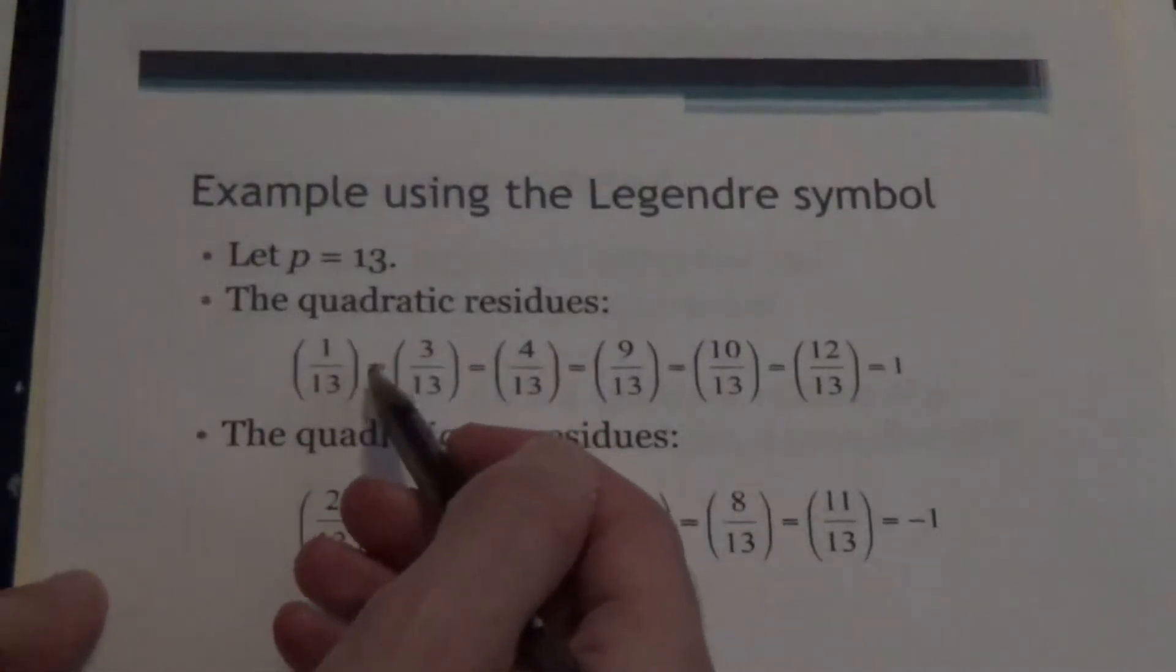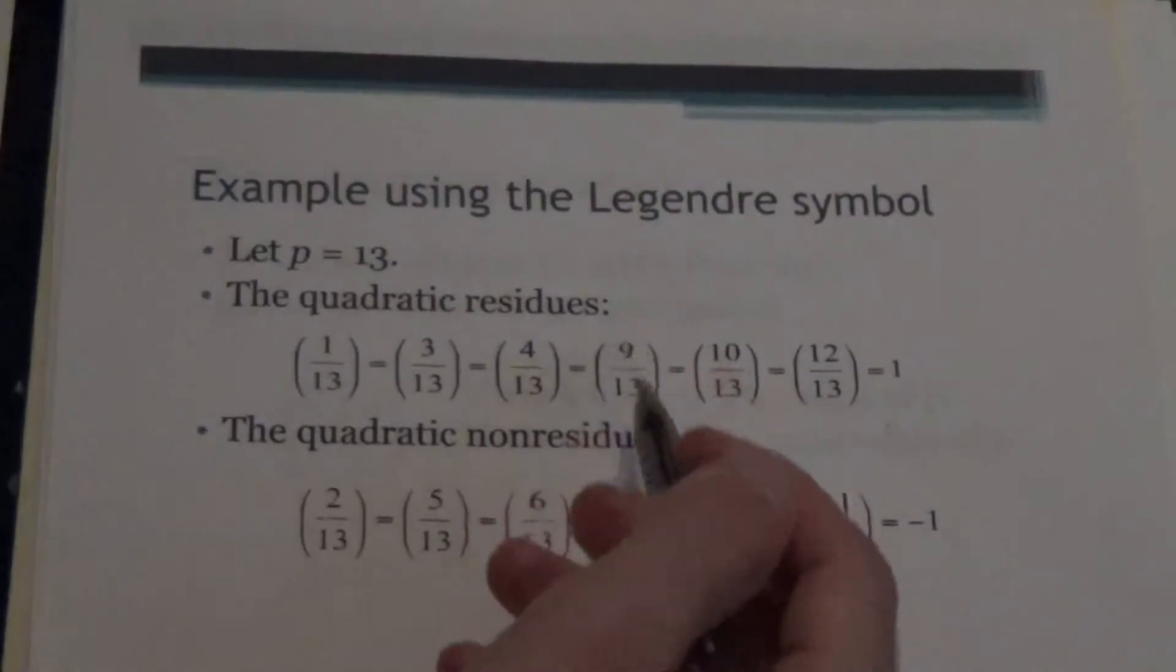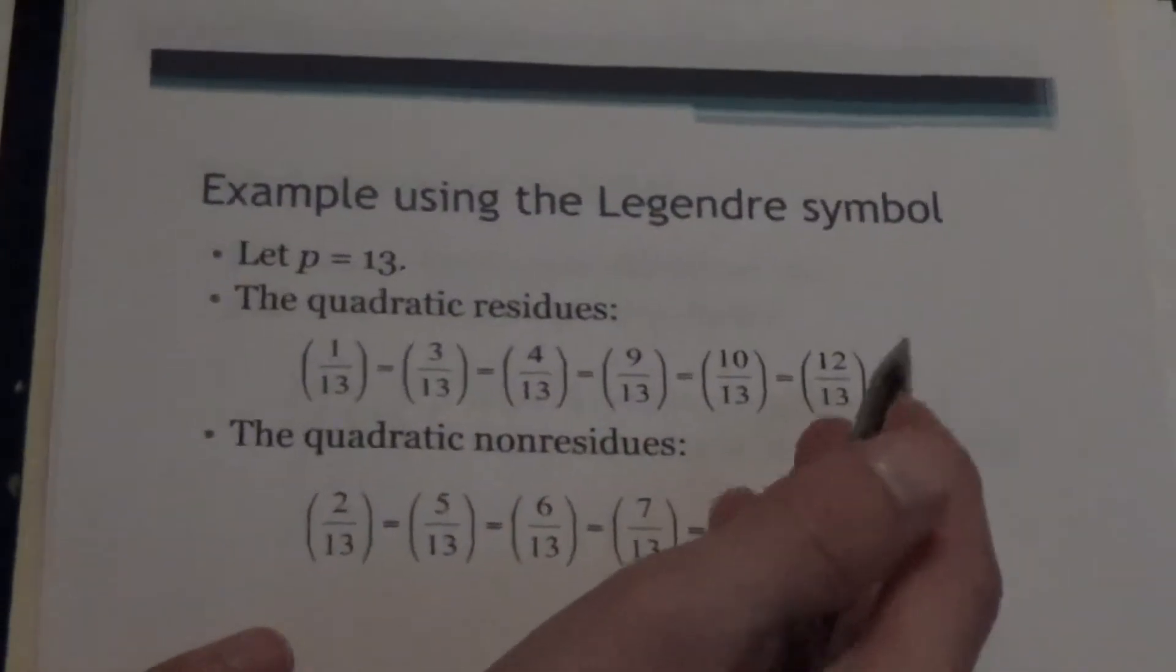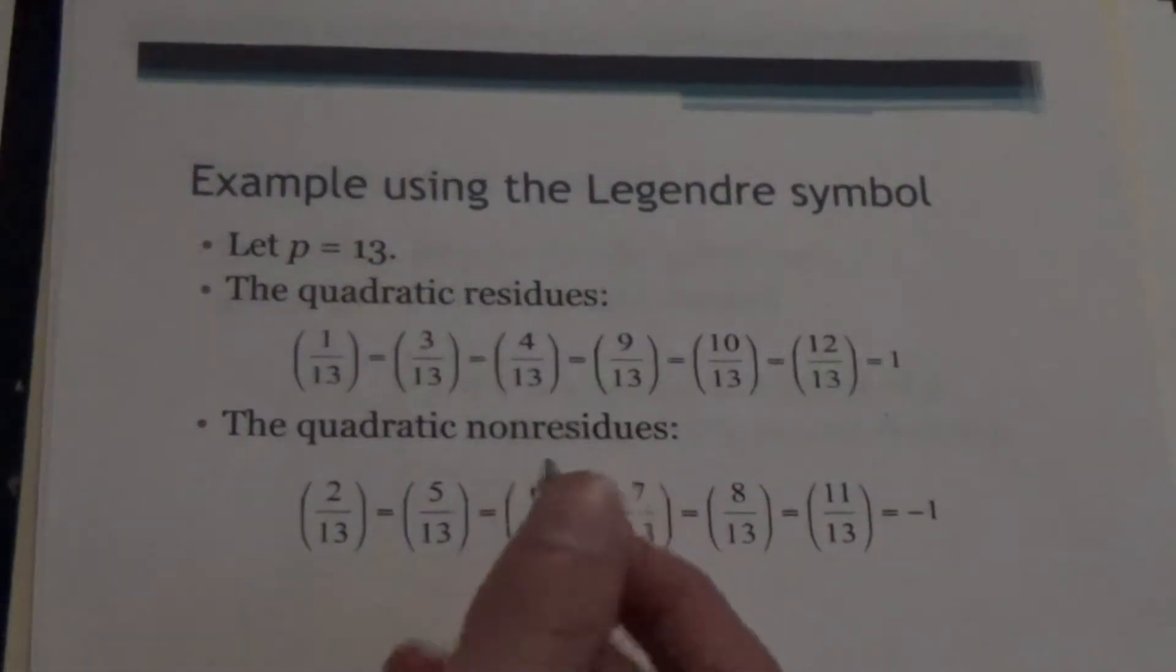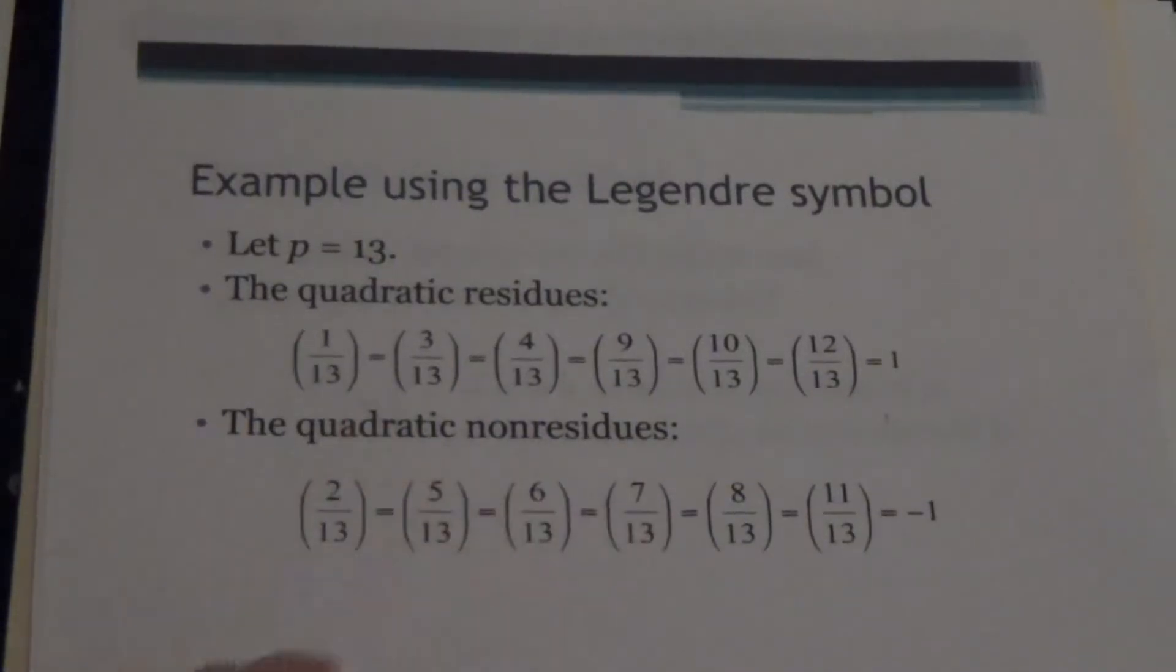So (1/13) = (3/13) = (4/13) = (9/13) = 1 because they are the quadratic residues. And for the non-residues, well, that would be everything else modulo 13, all of those other positive integers up to 13. So 2, 5, 6, 7, 8, and 11 would be given negative 1 by this notation.